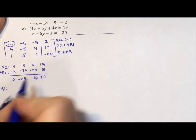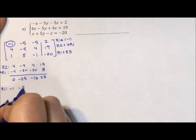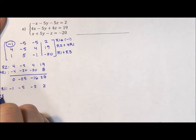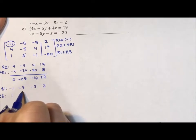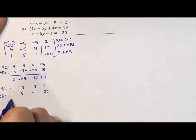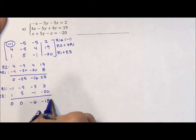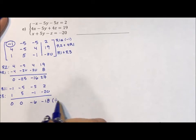Row 1 for the second addition is -1, -5, -5, and 2. Row 3 that we're adding to it is 1, 5, -1, -20. And when we add down, we get 0, 0, -6, and -18. I like that. I'm going to divide by -6 so that this becomes 0, 0, 1, 3.